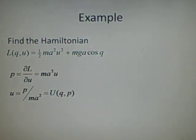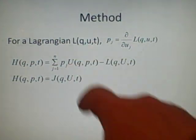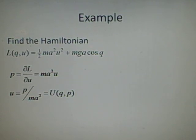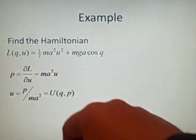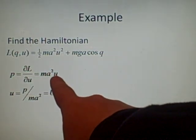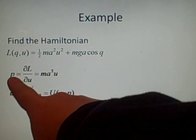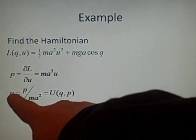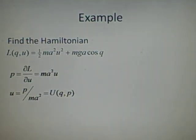Now we want the big U here, that's the next thing to do, which is u in terms of P and Q. So all we do here is we rearrange this equation so the ma² goes under the P. You can just ignore this because they're all equal. So u equals P over ma², which is the big U.